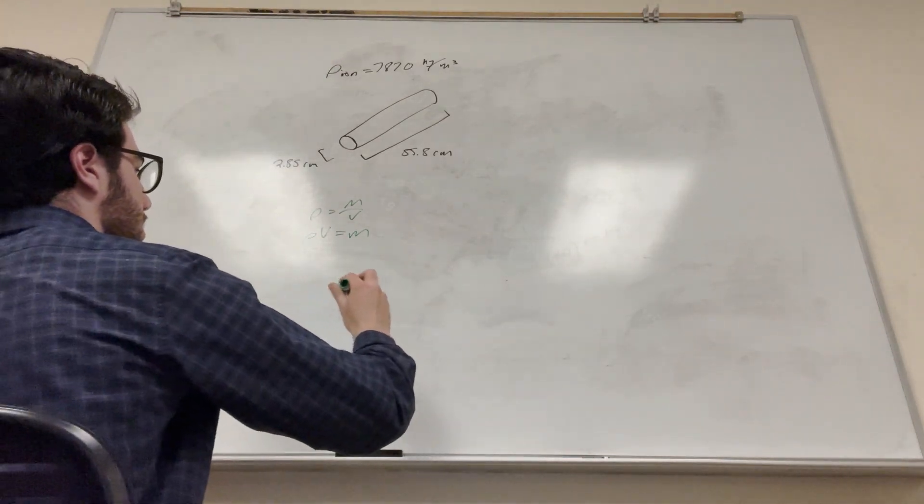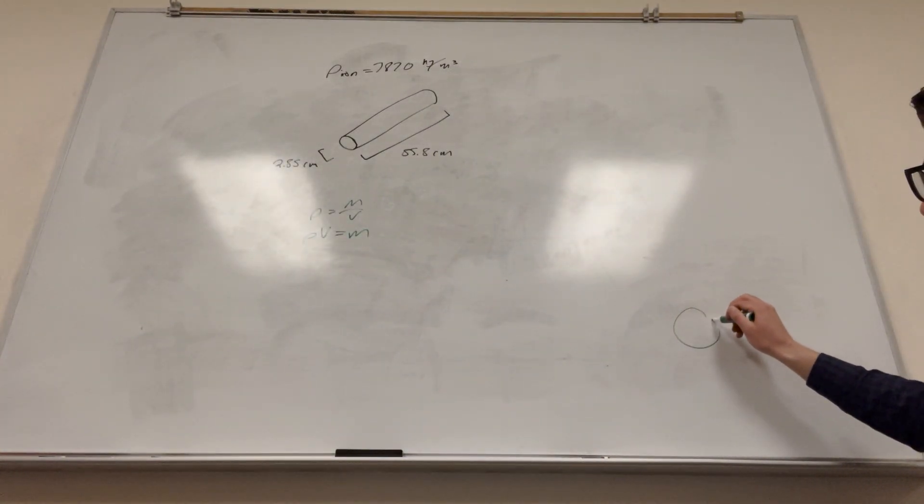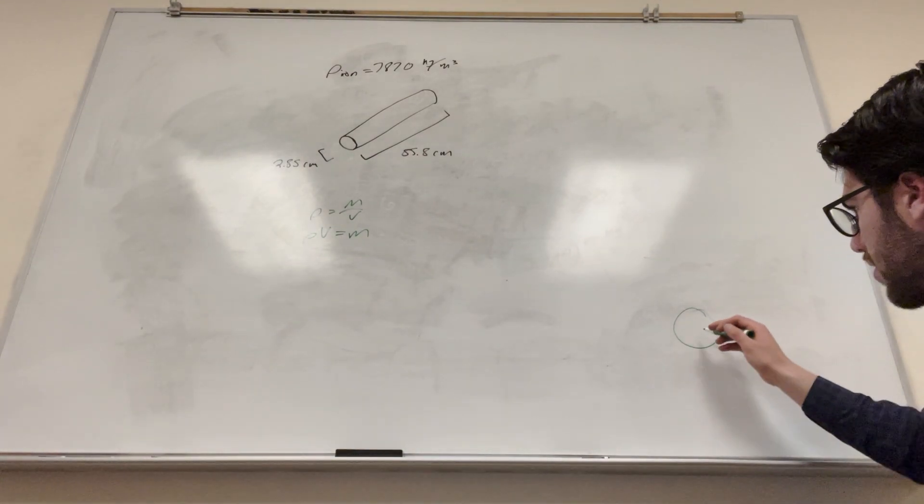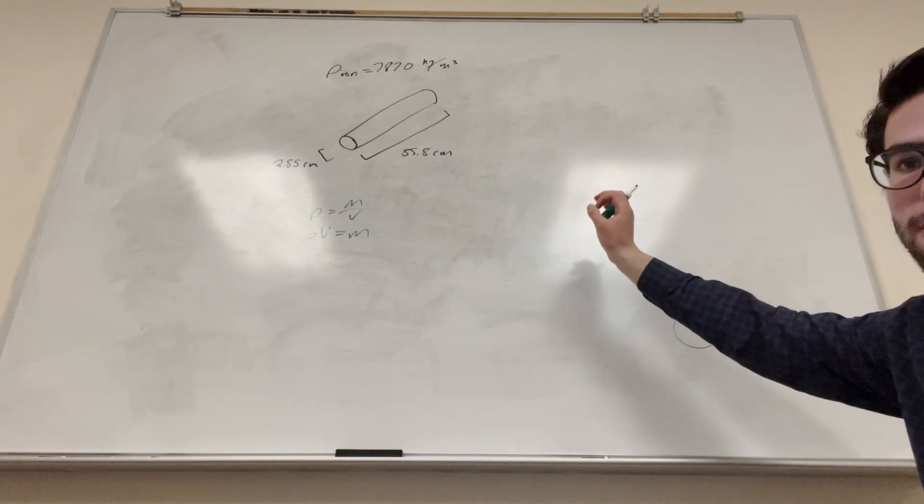So for a cylindrical thing like this, you're gonna want to take the circle on the bottom, find the area of it, and then multiply it by the length, right? So first we're gonna find the area of the circle on the bottom and just multiply it by the length.